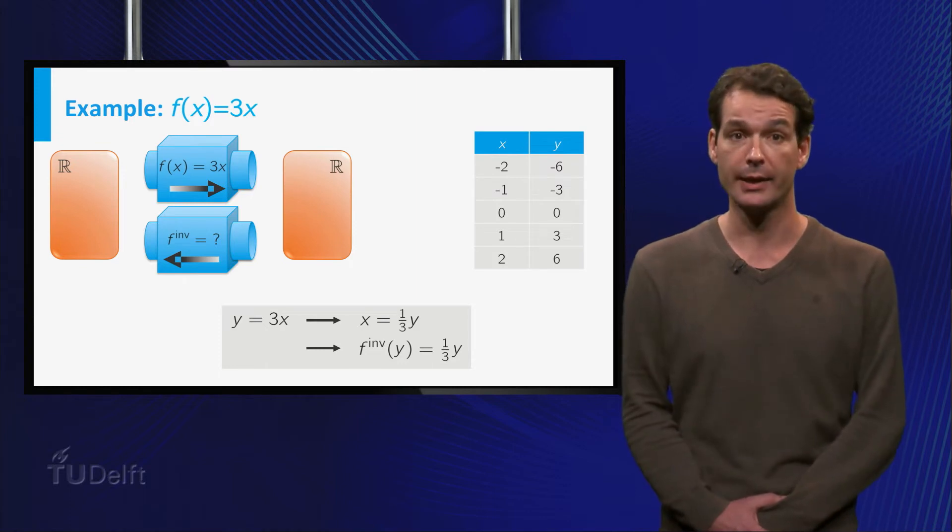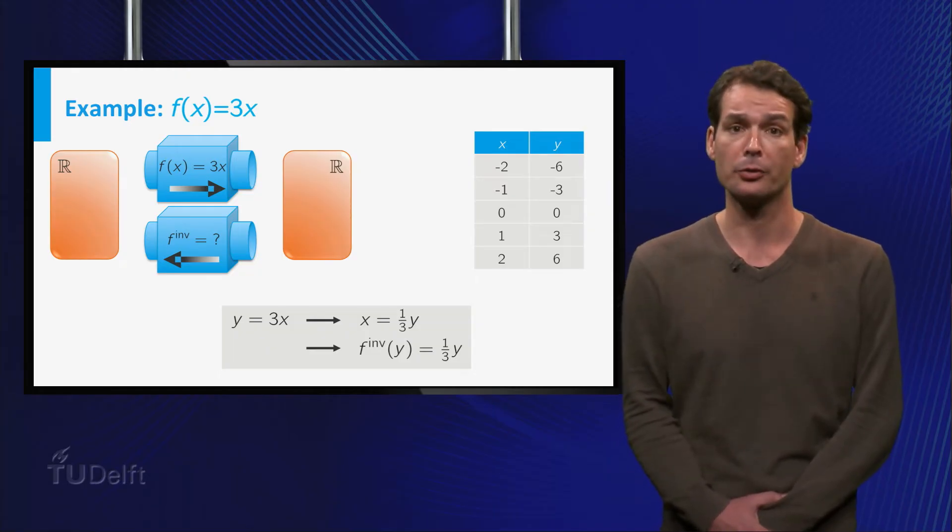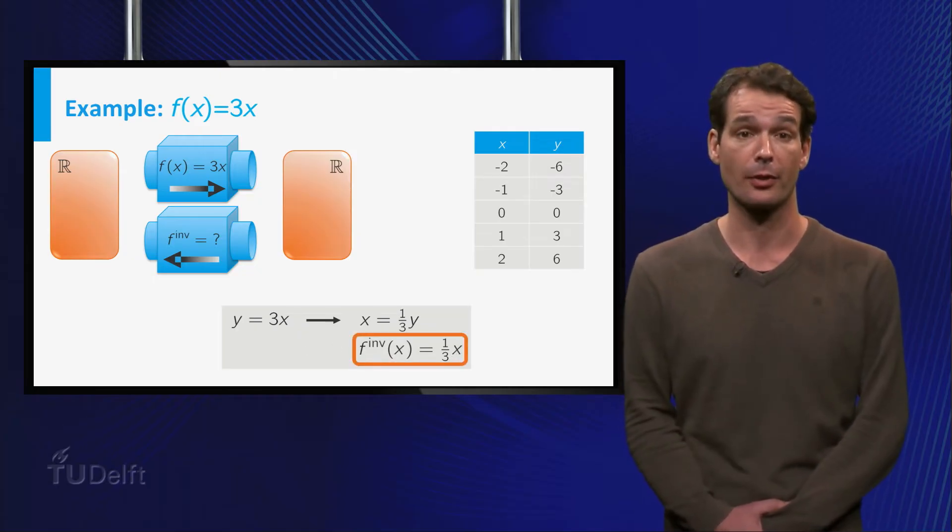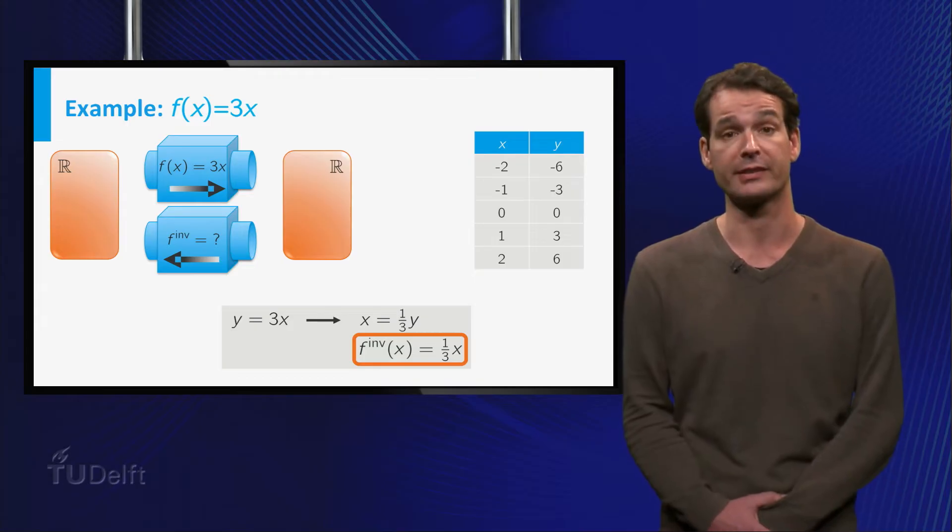As you know, we can use any letter for the variable of a function, and usually we use the letter X for the variable, and we also do this for inverse functions. So, we replace Y by X, and we find that the inverse of 3 times X is 1 over 3 times X.